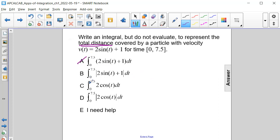Therefore, choices A and C definitely do not work. We're going to have the integral from 0 to 7.5 of the absolute value of our velocity function.